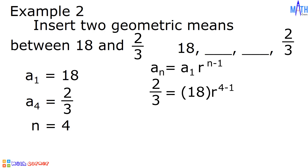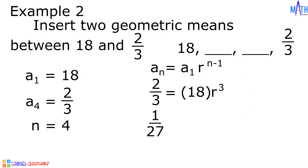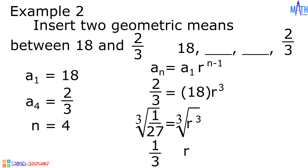Let us solve for the common ratio using the formula and substitute all the given values. a sub n becomes a sub 4, and a sub 4 is equal to 2 thirds. a sub 1 is equal to 18, r raised to 4 minus 1. Simplifying: 4 minus 1 is equal to 3. To isolate r cubed, we divide both sides by 18. 2 thirds divided by 18 equals 2 over 54, which in lowest terms is 1 over 27. And 18r cubed divided by 18 is equal to r cubed. The value of r is equal to 1 third.